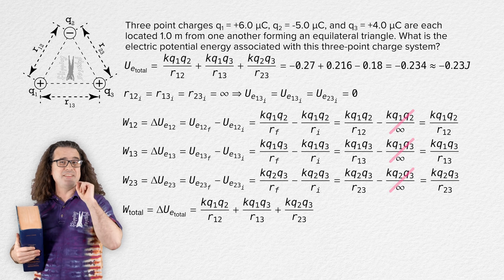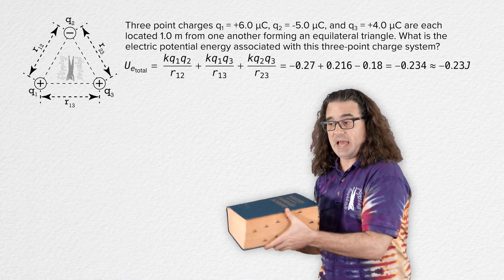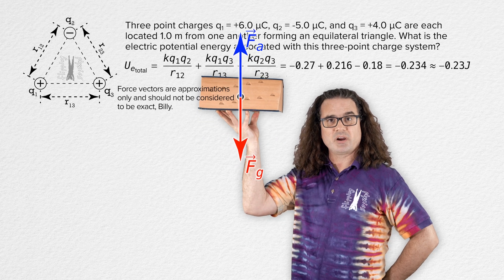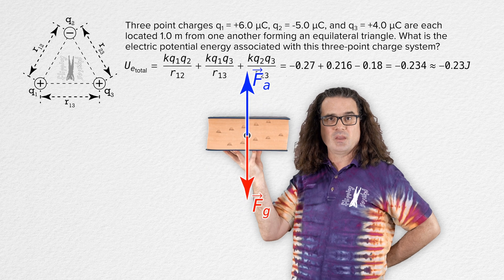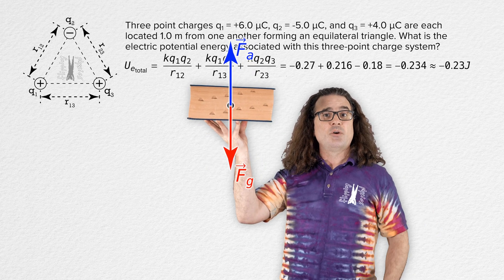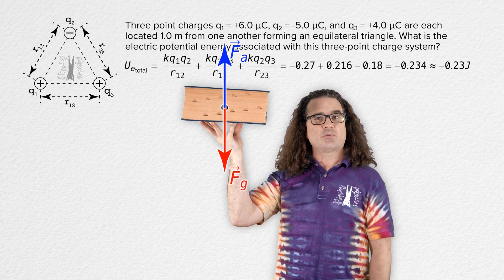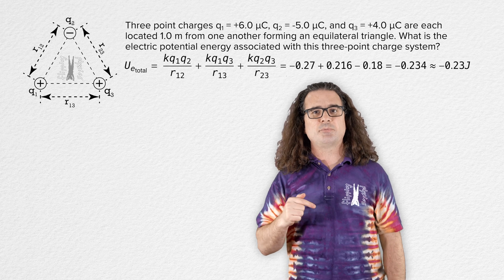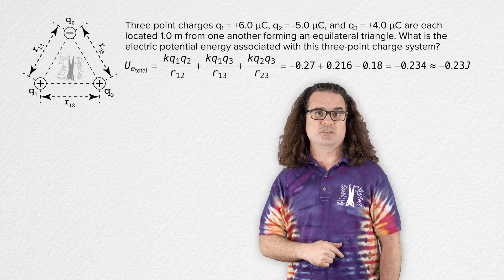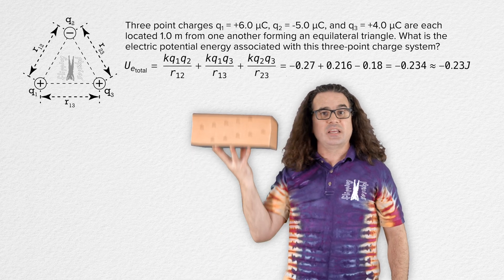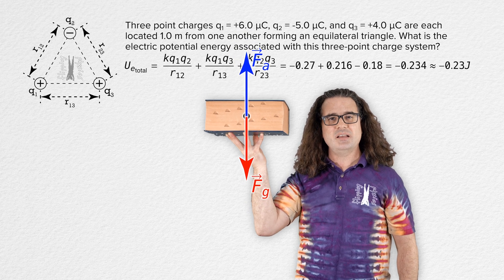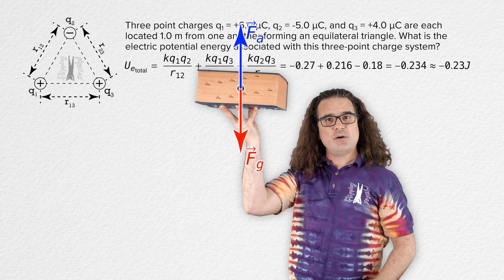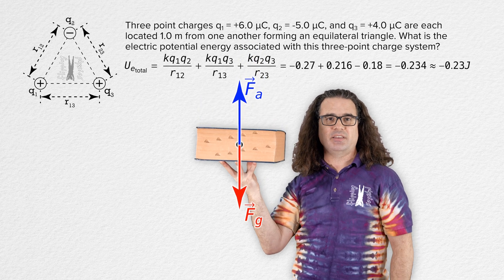Potential energy is stored energy which depends on the relative positions of various parts of a system. For example, as I lift this book at a constant velocity, I am applying an upward external force to the book, which does positive work on the book and puts gravitational potential energy into the book-Earth system. The book-Earth system now has more potential to be converted to other forms of energy. If I instead lower the book at a constant velocity, the external force I apply is still upward, but the displacement is downward, and I am therefore doing negative work on the book, which removes gravitational potential energy from the book-Earth system.